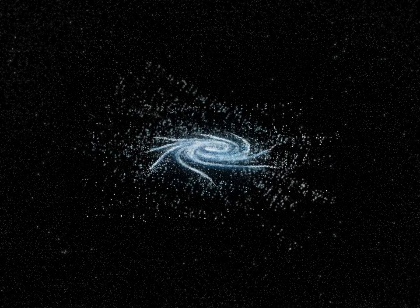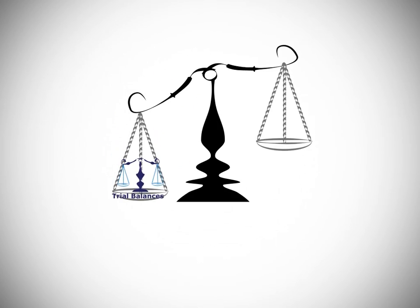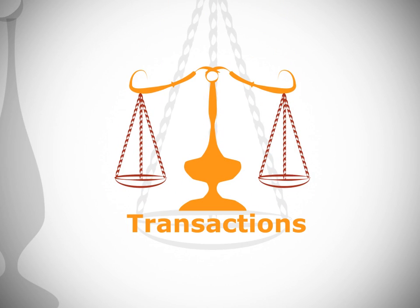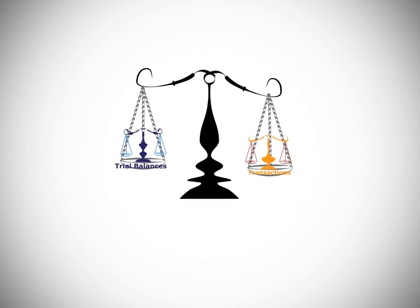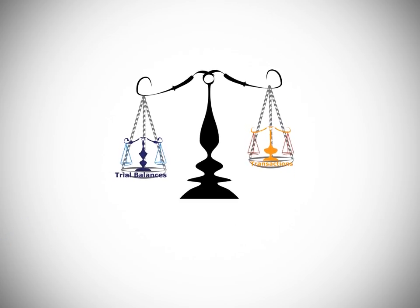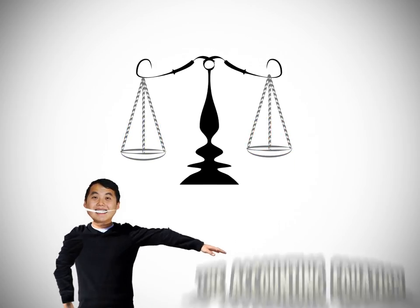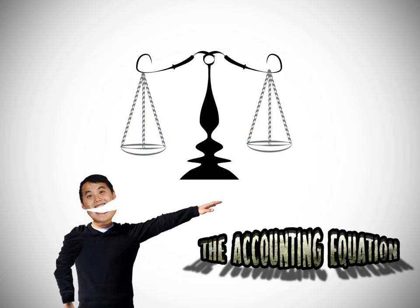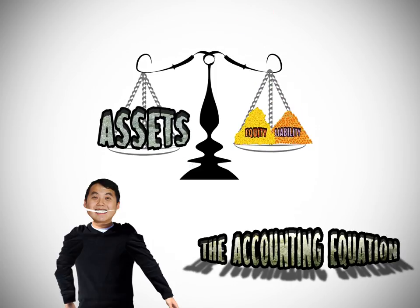This is where it all starts, and in accounting, everything balances. We'll have trial balances that balance. We'll have transactions that balance. When we do something to one, we can't stop the transaction until we do something to something else. If you look at the accounting equation, assets equal liabilities plus equity.